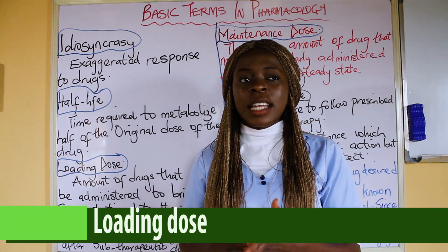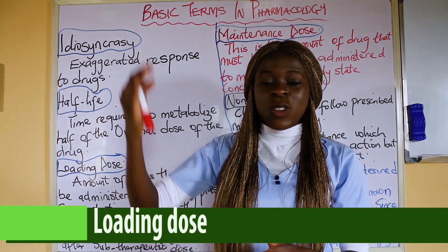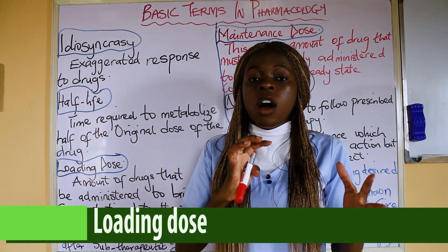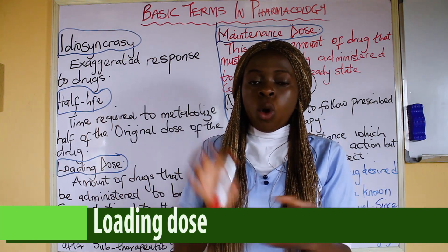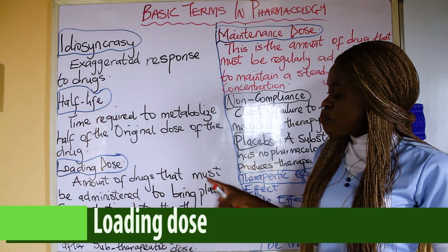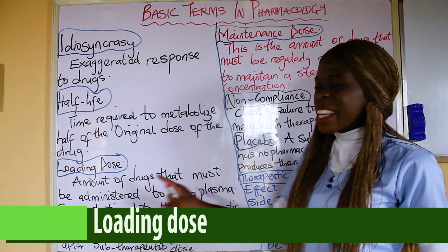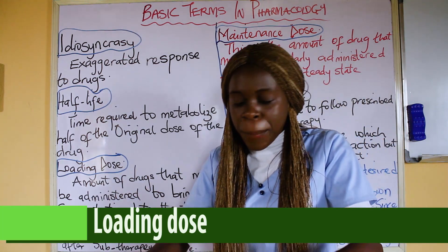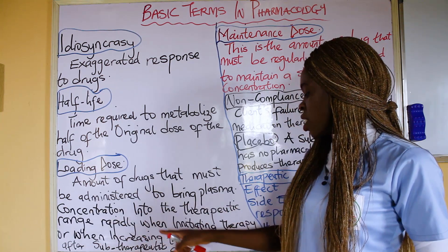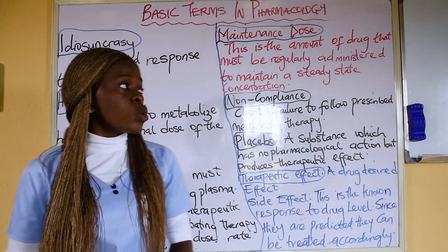In the hospital you might hear: give a loading dose of 50% dextrose saline — and you see them rush it. It's not 8 drops per minute; you rush it rapidly so that the person's plasma can go back to its normal state. So loading dose is the amount of drugs that must be administered to bring plasma concentration into the therapeutic range — that's the normal range — rapidly, when initiating therapy or when increasing the dose after a sub-therapeutic dose.